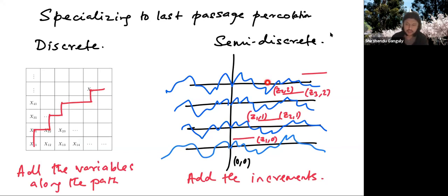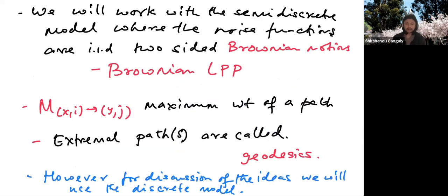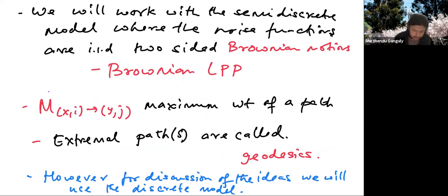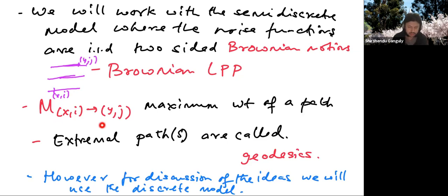So the semi-discrete version: you have all these functions and in the example we will treat, these functions would be Brownian motions. Given any function and any path which stays on the first line for some time, then jumps to the next line, stays there for some time, you pick up the increments of the corresponding functions, and that's going to be the weight of the associated oriented path. The maximum weight of any path between two points is denoted M(x_i, y_j), and the extremal path that attains the maximum will be called a geodesic.